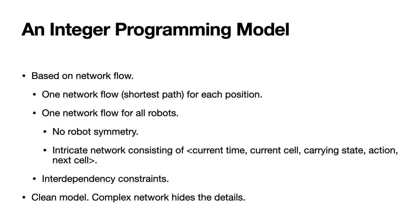In our network we have a coordinate in terms of the current time step, the current cell, the carrying state, and the action, and the next cell where the robot will be. The carrying state is a 0-1 state indicating whether the robot is currently carrying a block or not. We also have interdependency constraints between the network flows of the positions and the network flow of all the robots. By doing this we have a very clean IP model — all of the complexity is hidden inside the state, which is the current time, the current cell, and so on. So the model is very clean overall.